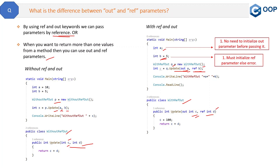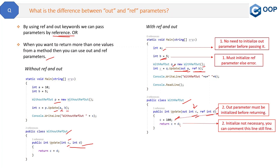The second difference: an out parameter must be initialized before returning from the method. We receive the out parameter in variable c and must assign some value to it before the method returns. In case of a ref parameter, even if you don't assign any new value inside the method, there is no problem and it will return properly. But if you don't initialize the out parameter c before returning, it will throw a compile-time error.